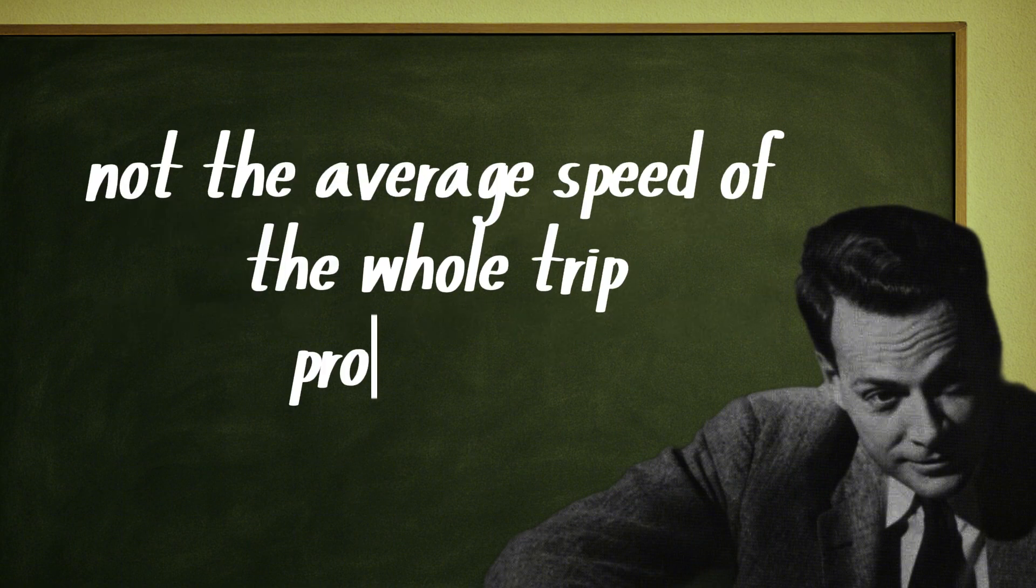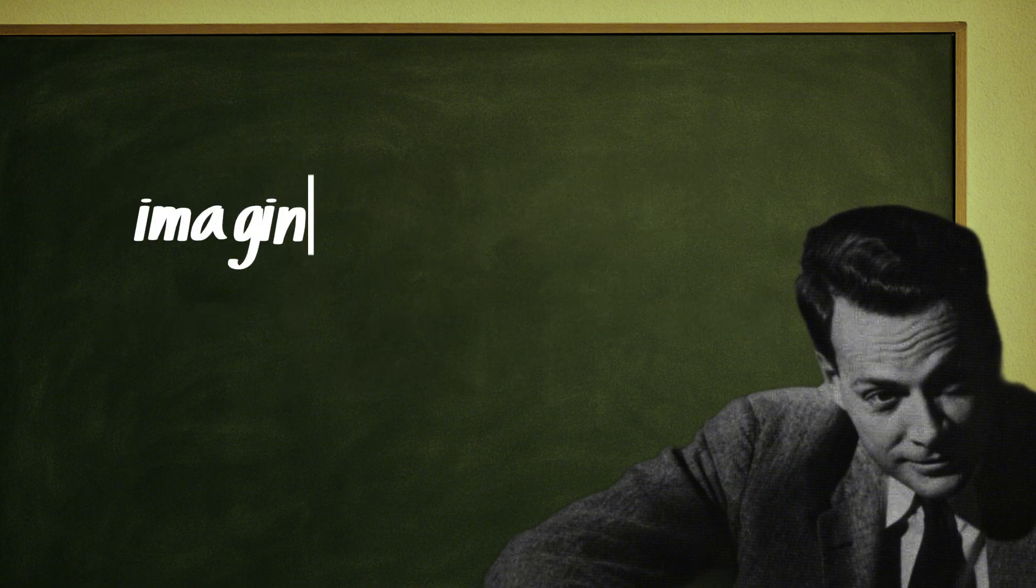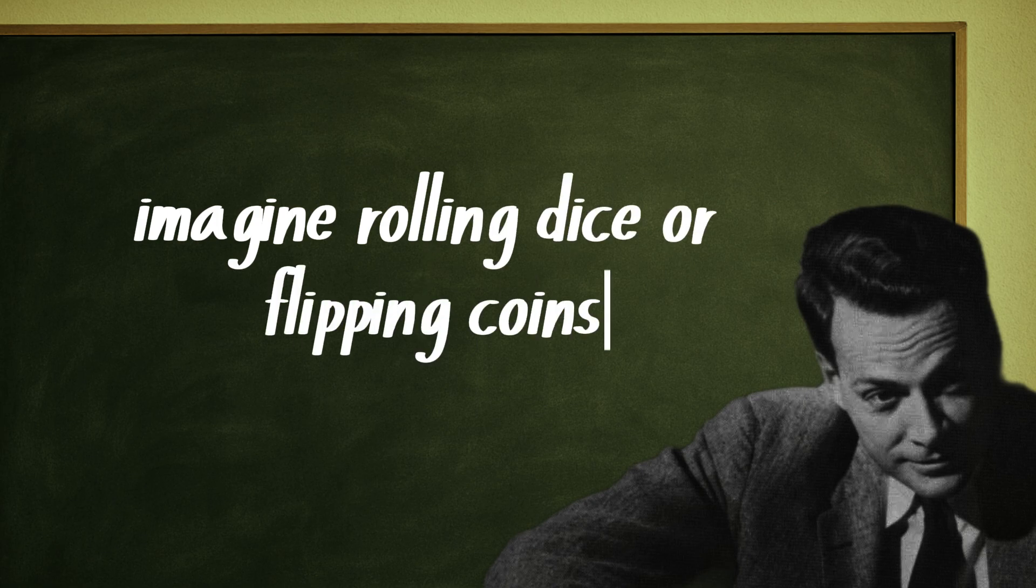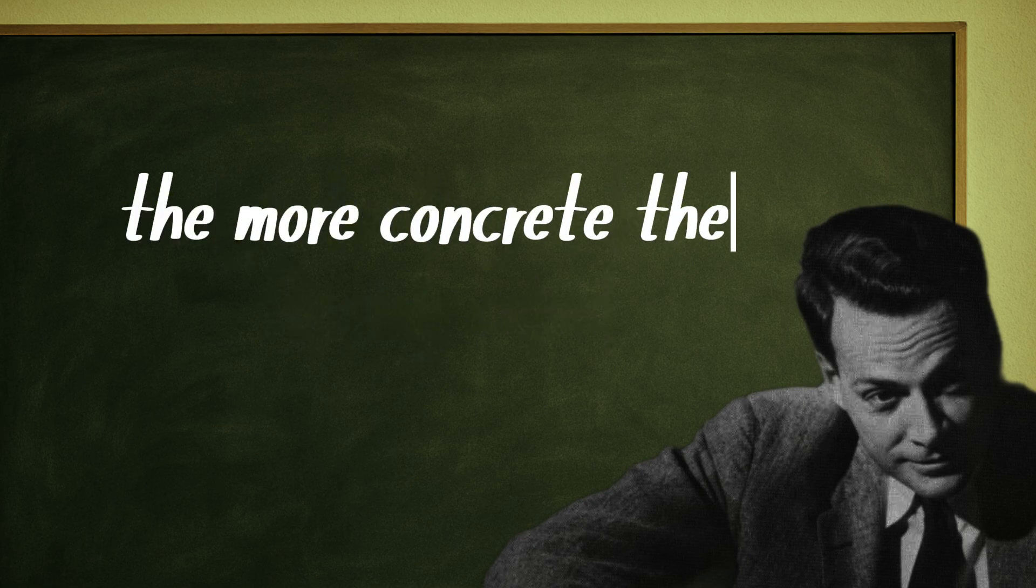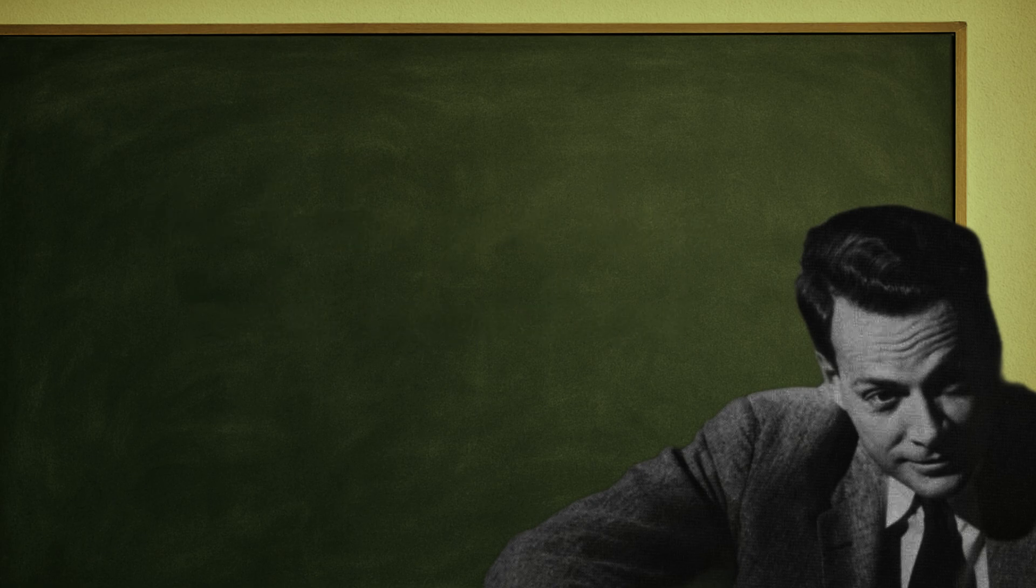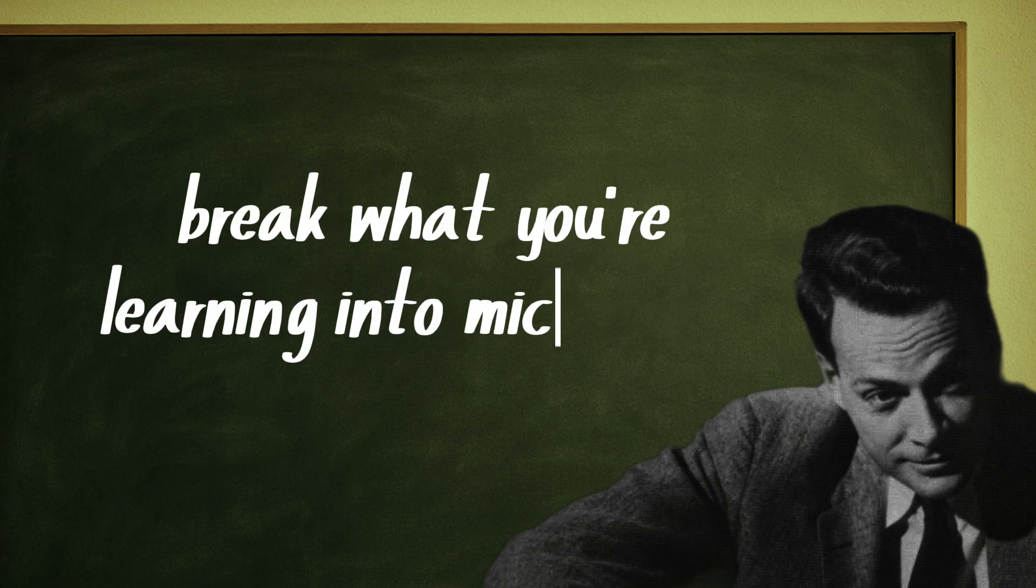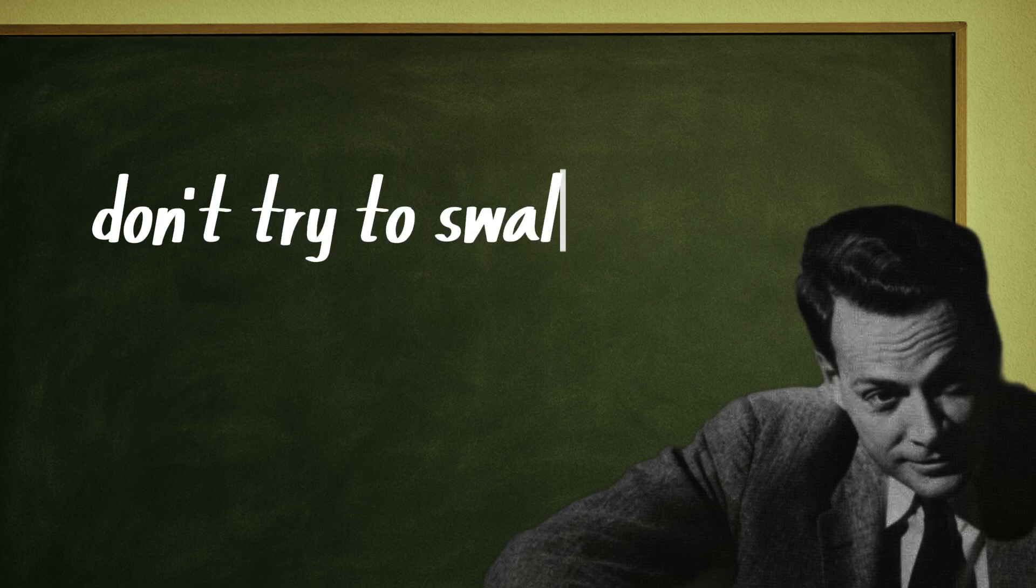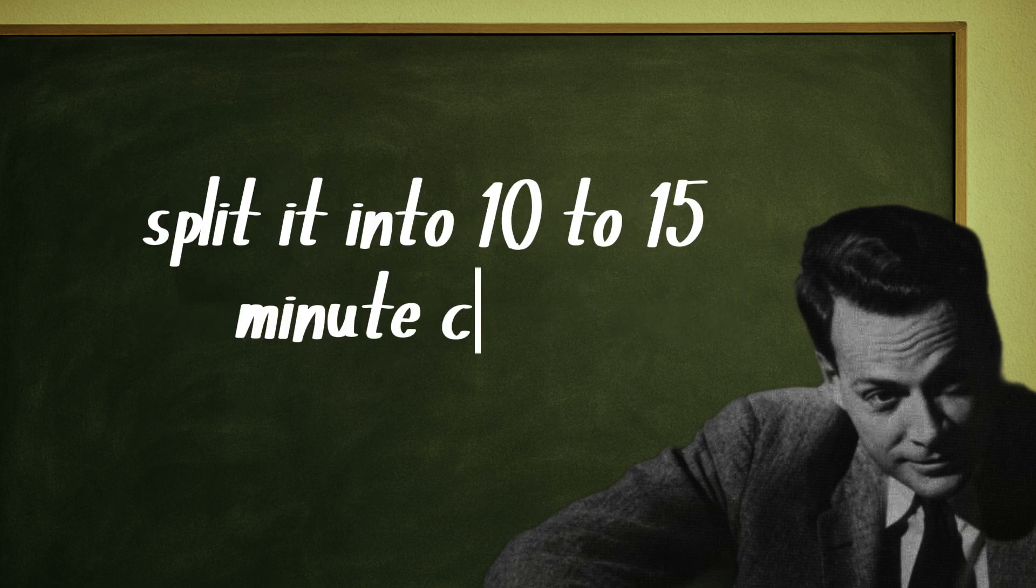Derivatives: imagine measuring the speed of a car right now, not the average speed of the whole trip. Probability: imagine rolling dice or flipping coins. The more concrete the analogy, the faster your brain builds connections. Break what you're learning into micro blocks. Don't try to swallow the entire subject at once. Split it into 10 to 15 minute chunks.